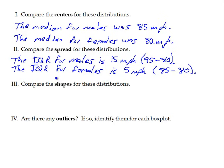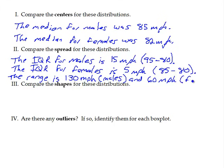Now we can also talk about the range using the box plot for the spread. The range is the largest minus the smallest. The range for males would be 130 miles per hour. And for females, it would be 100 minus 40, which would be 60 miles per hour. So in both the IQR and the range, there's more spread to the male distribution than the female distribution.